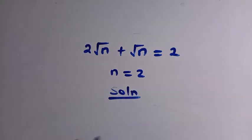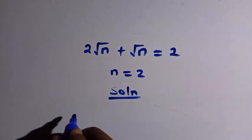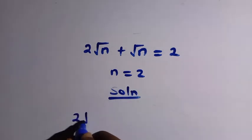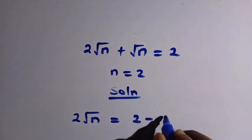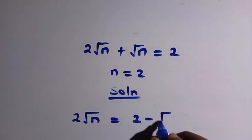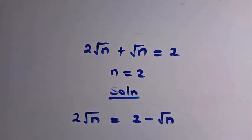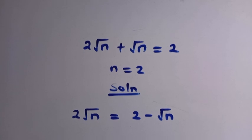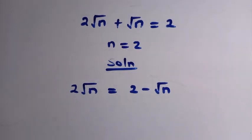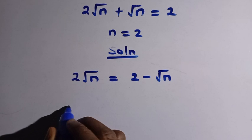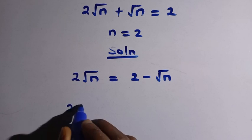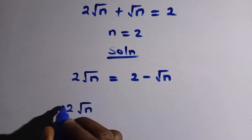For the solution, suppose we take root n to the other side: we have 2√n equals 2 minus √n. Then we take the square of both sides, so by squaring both sides, here we have (2√n)² equals (2 minus √n)².